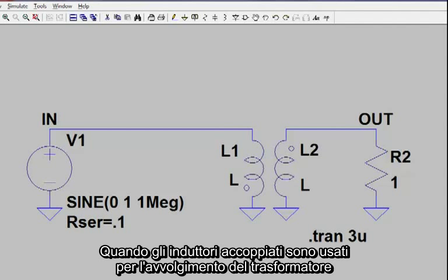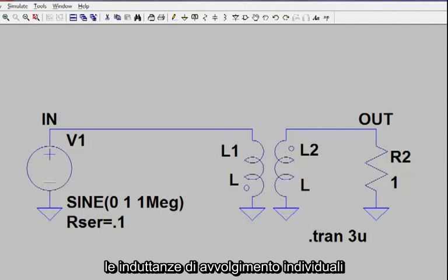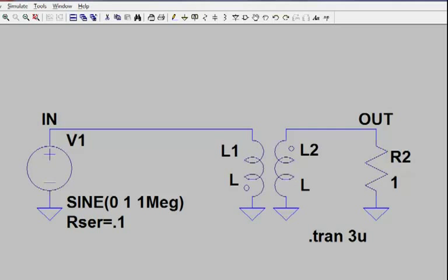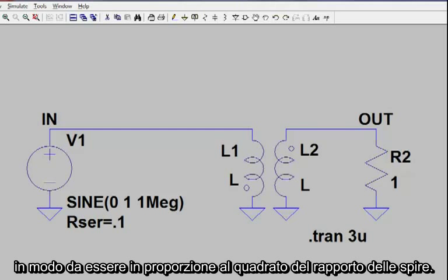When coupled inductors are used as transformer windings, individual winding inductances rather than the turns ratio need to be specified. Therefore, the inductance ratio needs to be set to be proportional to the square of the turns ratio.